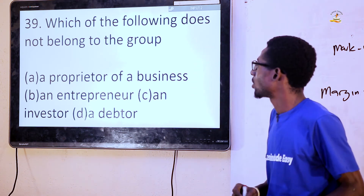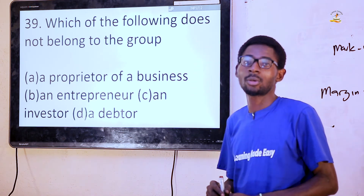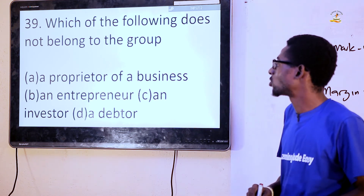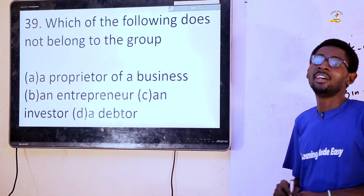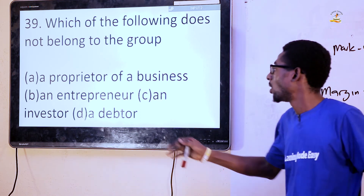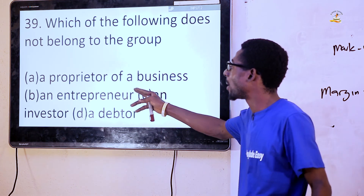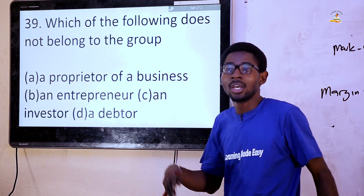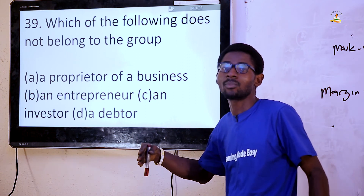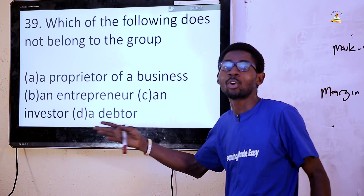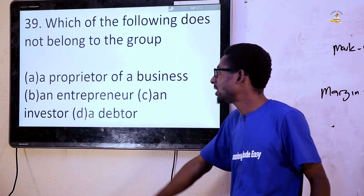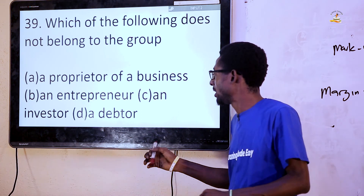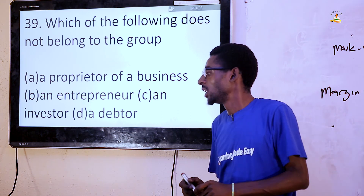Question 39: Which of the following does not belong to the group? Options: proprietor of a business, entrepreneur, investor, debtor. Options A, B, and C are owners of the business. Option D, a debtor, is a debtor of the business — not an owner. So the answer is D, a debtor.